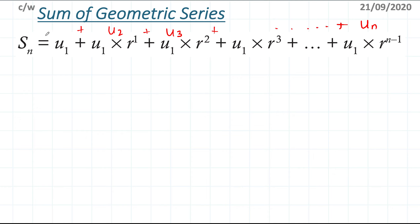Adding them together gives me Sn — the sum up to n terms. This is the same notation we use for the arithmetic sequence, so Sn represents the sum of the geometric terms up until n.